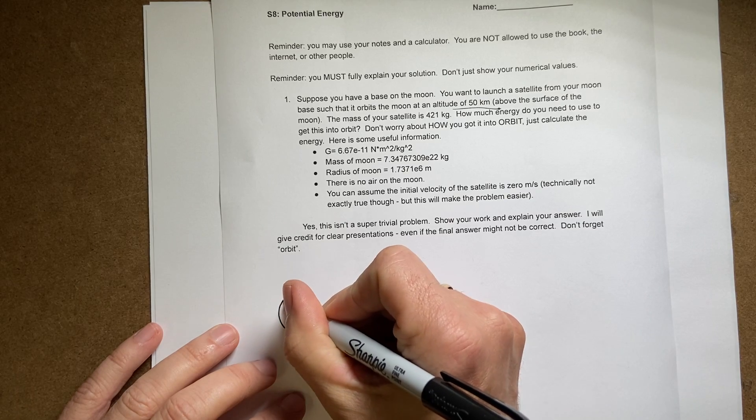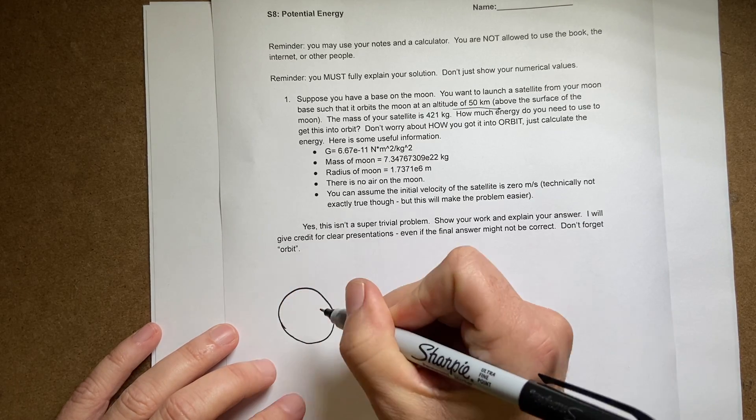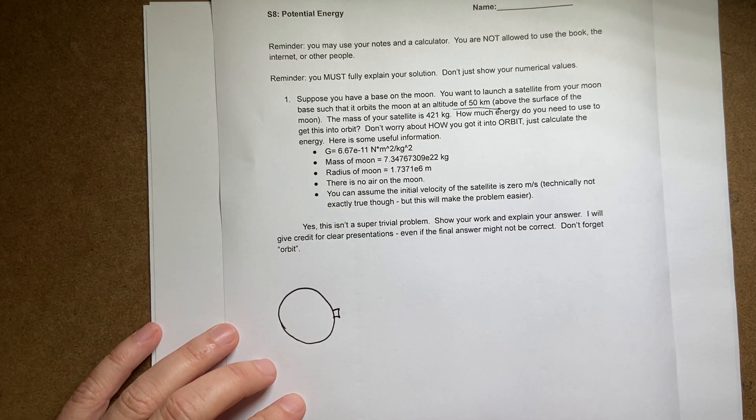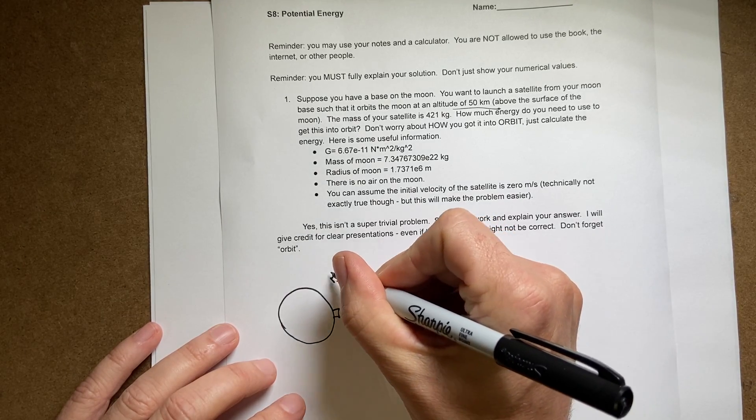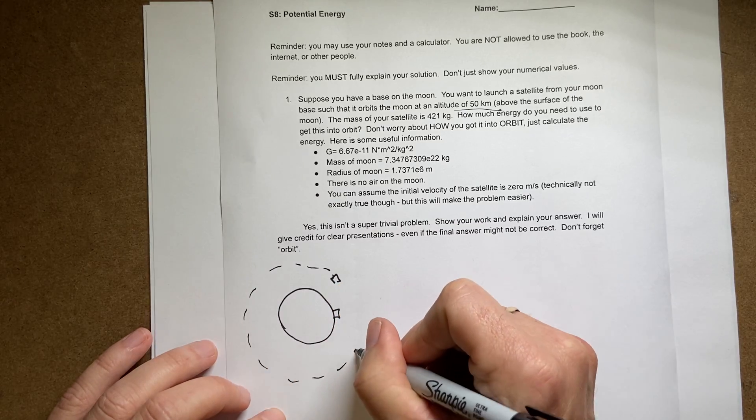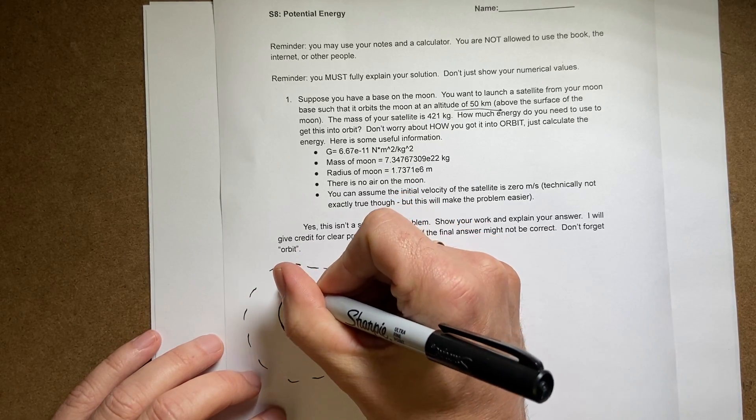Let's just go ahead and start with a picture. Let's say here is my moon and then here is my satellite to start with and then I want to finish with the satellite up here. This distance is 50 kilometers.